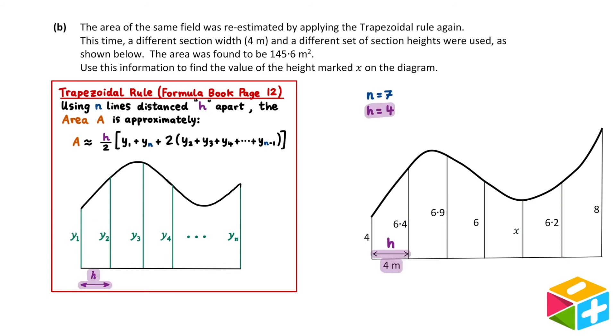h is the distance between the vertical lines, and in our picture h is equal to 4. A represents the area, and we are told in the question that the area is 145.6.